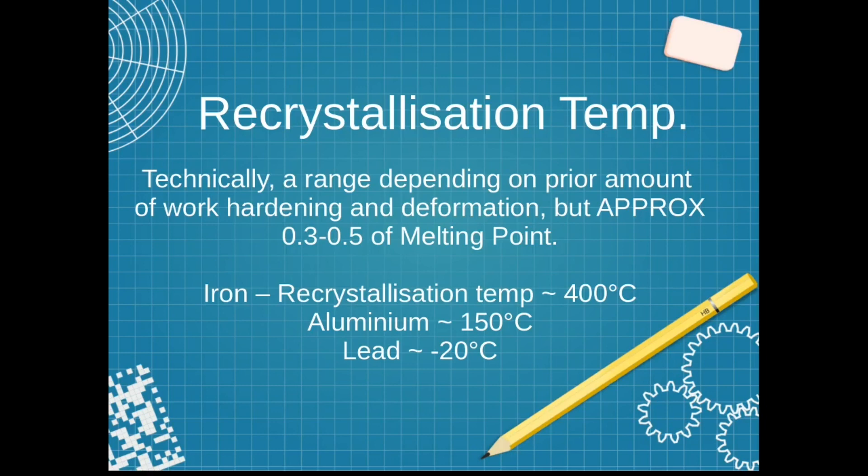Recrystallization temperature is a key point relating to annealing and cold work. At a certain temperature, the atoms in a metal have got enough energy to spontaneously move and to spontaneously restore themselves to their equilibrium position. It might be face-centered cubic, might be body-centered cubic, might be hexagonal close-packed. But at a certain temperature, the atom has enough energy to move.